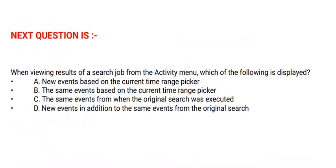Next question: when viewing the results of a search job from the activity menu, which of the following is displayed? Option A: New events based on the current time range picker. Option B: The same events based on the current time range picker. Option C: The same events from when the original search was executed. Option D: New events in addition to the same events from the original search. The correct option is option C.